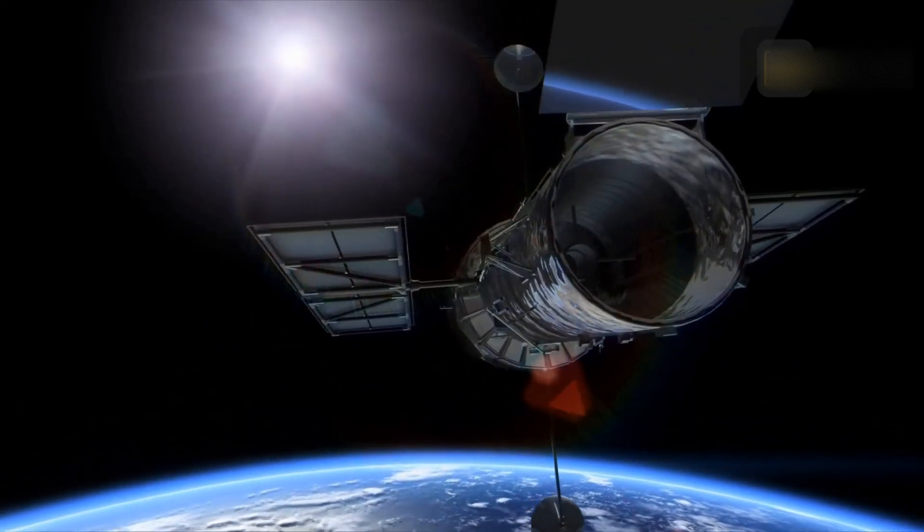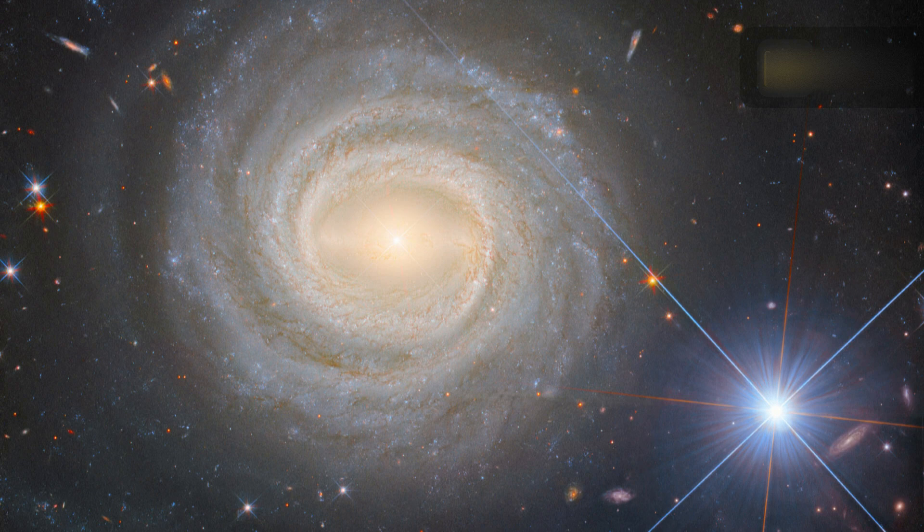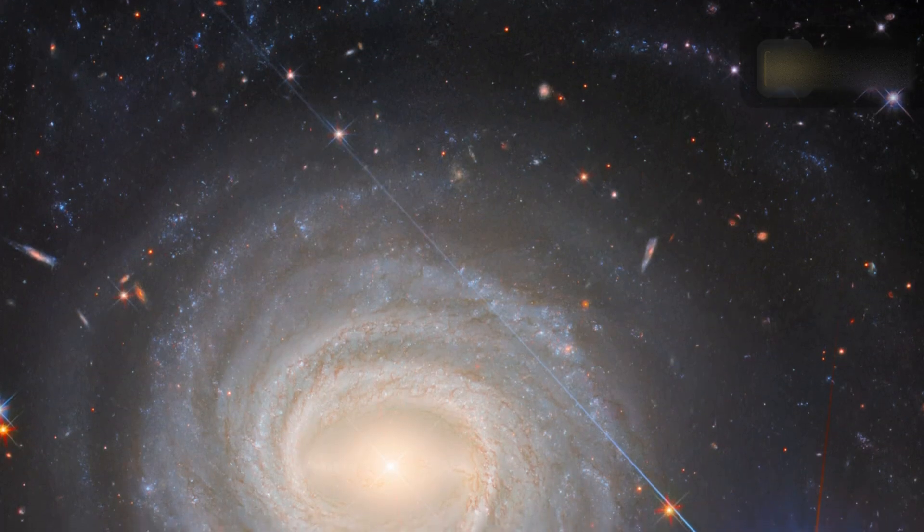Astronomers using the NASA and ESA Hubble Space Telescope have taken a picture of the bright-barred spiral galaxy NGC 3783, which is found in the constellation of Centaurus.